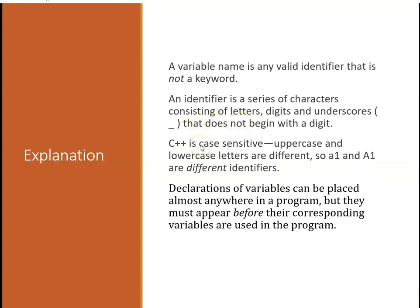A variable name is any valid identifier that is not a keyword. A valid identifier is a series of characters, digits, and underscores that does not begin with a digit - it has to begin with a letter or an underscore. C++ is case sensitive - uppercase and lowercase are different. A1 lowercase and A1 uppercase are different identifiers - that's a common bug. Declarations of variables can be placed anywhere in the program, but they have to be placed before they're used.